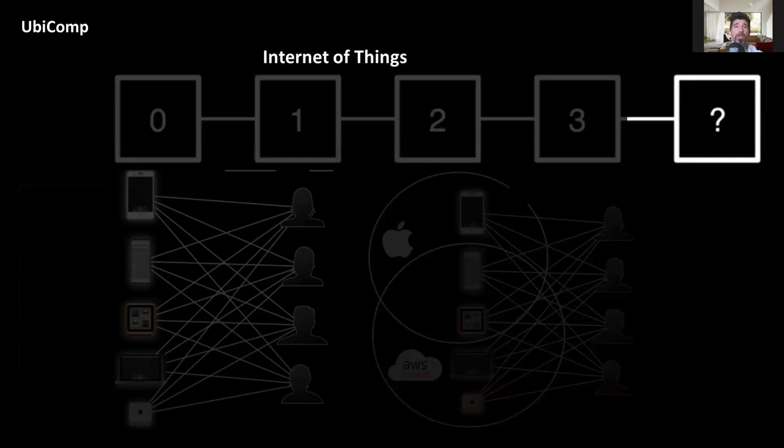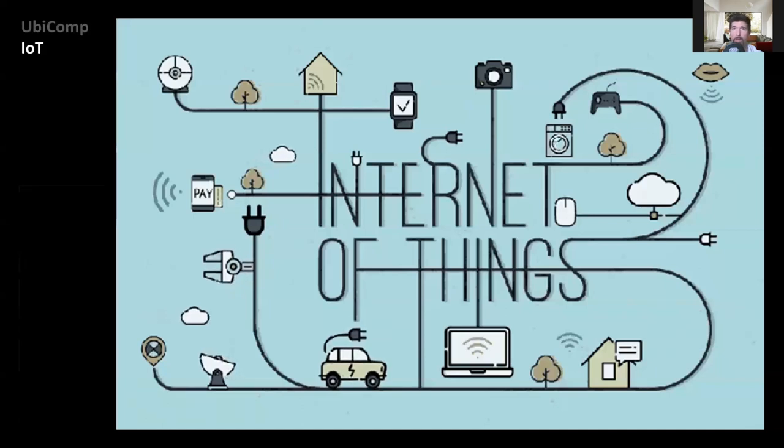This phenomenon of interconnectivity can be explained by introducing the term Internet of Things, which describes devices with sensors, processing ability, software, and other technologies that connect and exchange data with other devices and systems over the Internet or other communication networks.